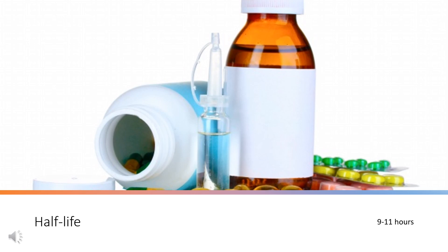Half-life: The half-life of amphetamine highly depends on the isomer. For D-amphetamine, the reported half-life is approximately 9 to 11 hours, while for L-amphetamine the half-life is reported to be 11 to 14 hours. The urine pH can modify this pharmacokinetic parameter, which can vary from 7 hours in acidic urine to 34 hours in alkaline urine.